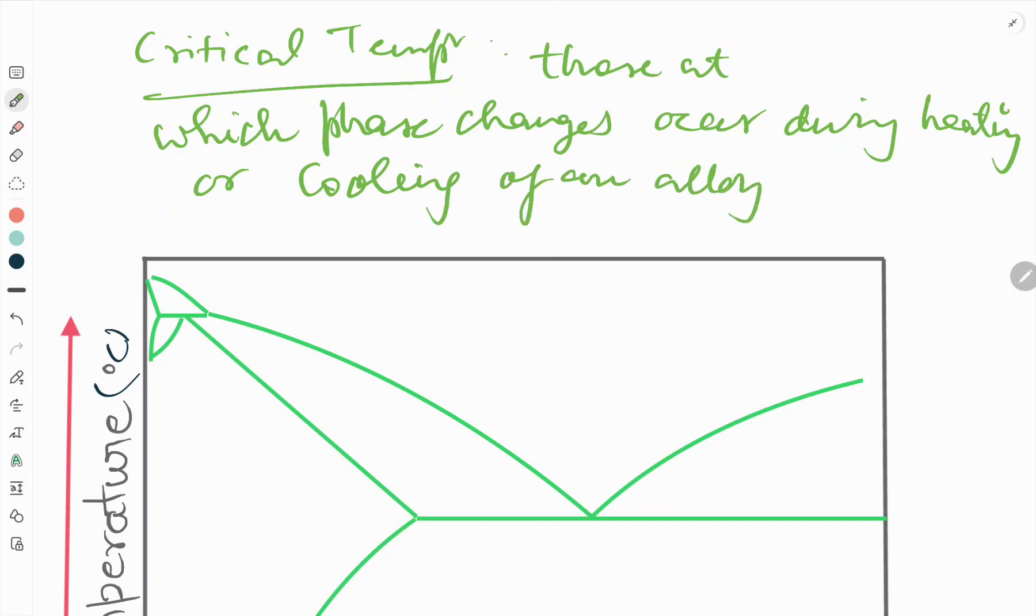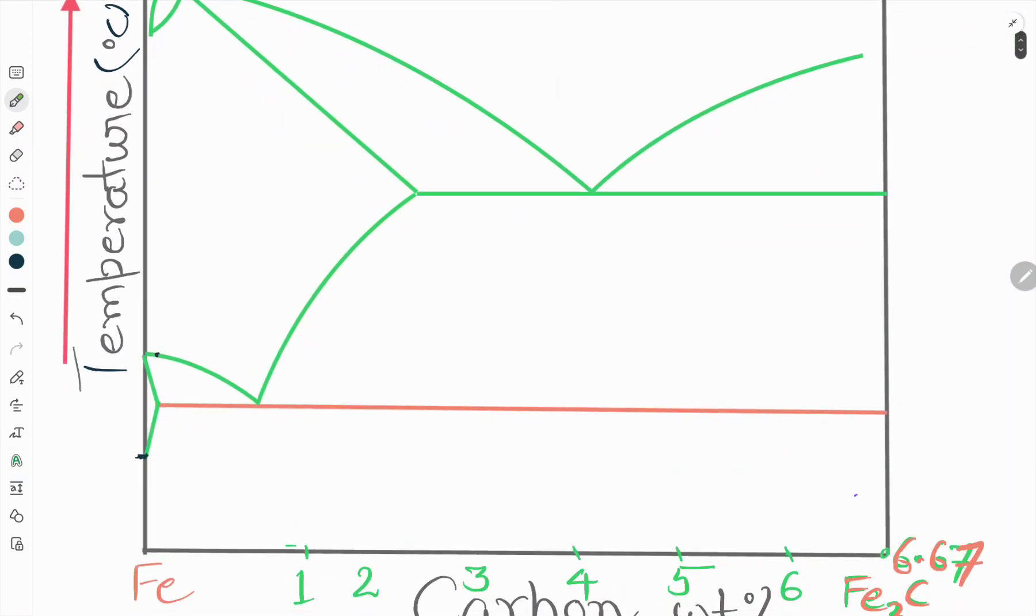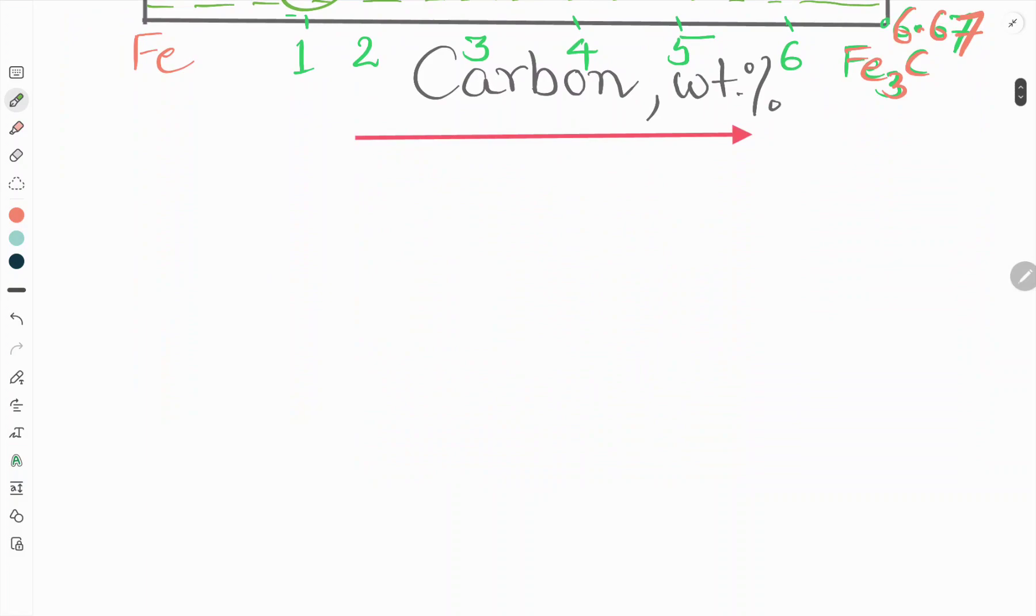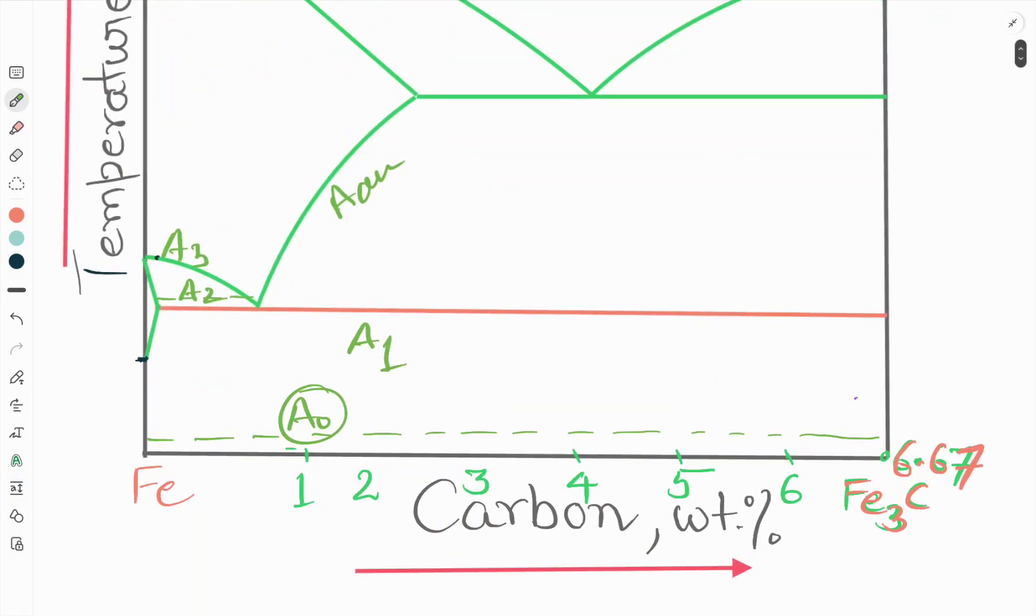Those are called critical temperature, and certain symbols are used to denote the critical temperatures in case of steels. We will see here one is A1 line, this is A2 line, this is A3 line, this is ACM line, and here one more line that is a special one, A0. Now we will explain all these lines: A0, A1, A2, A3, and ACM.